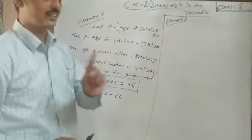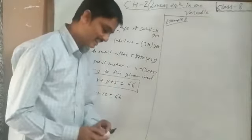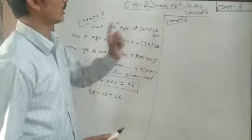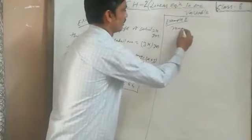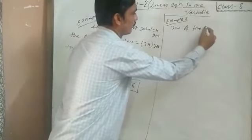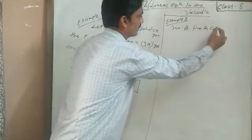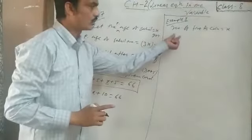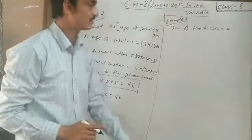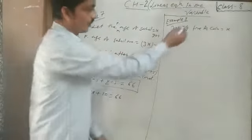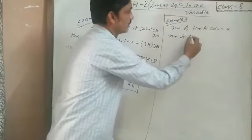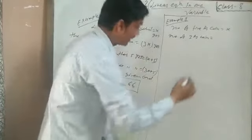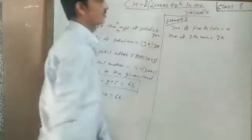According to the first condition, let the number of 5-rupee coins be equal to X. According to the given condition, the number of 2-rupee coins is 3 times the number of 5-rupee coins, so the number of 2-rupee coins equals 3X.